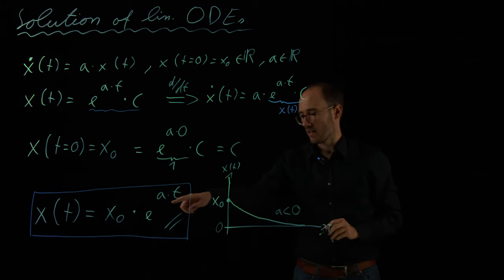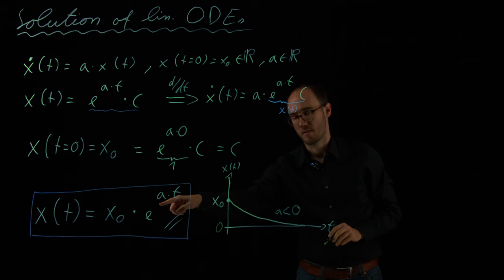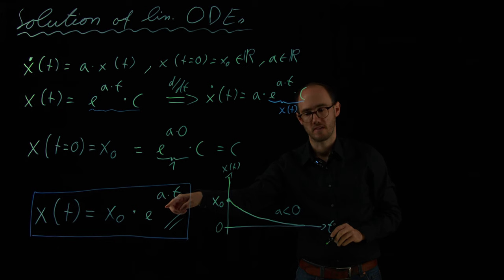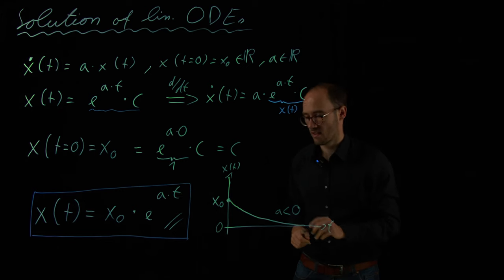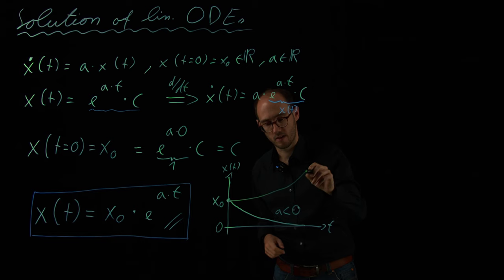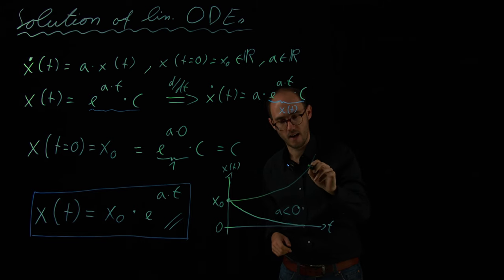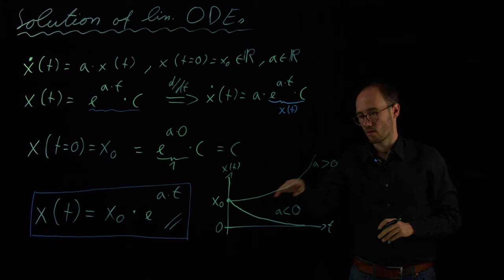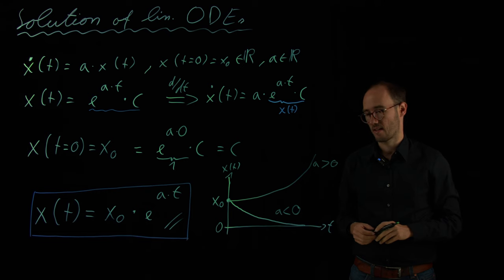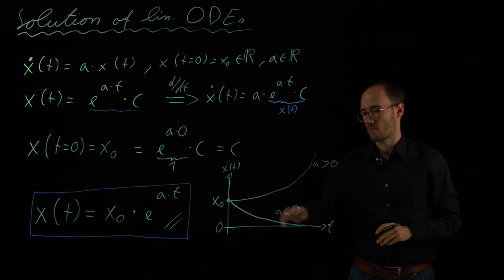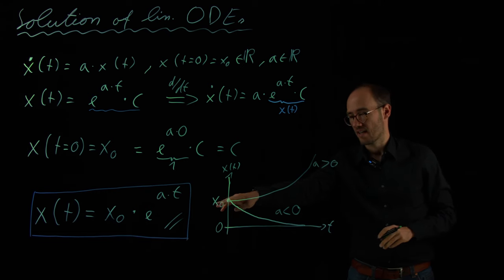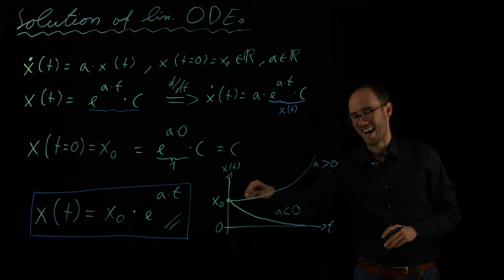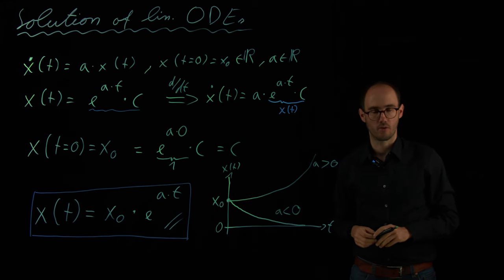If A is a positive number, this entire exponent becomes a positive number with this exponential function. So, this basically blows up and goes towards infinity. So, we would have qualitatively something like this for A being a positive number greater than zero. So, in this case, we could also call the system unstable, as we will see later in one of the follow-up videos, because giving some initial state, the state response is unlimited. It completely goes through the roof.